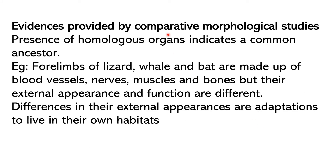This is the comparative morphological studies — the presence of homologous organs. For example, in a lizard, whale, and bat, it is basically the same structure: blood vessels, nose, muscles, bones. The external appearance and function differ, but the structure is the same — these are homologous organs, indicating a common ancestor.